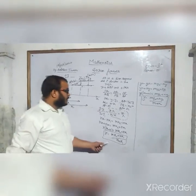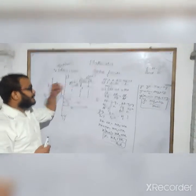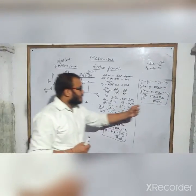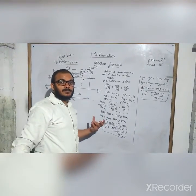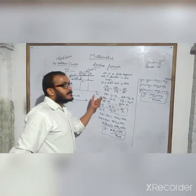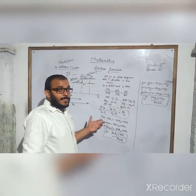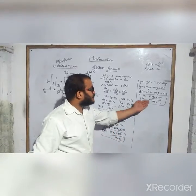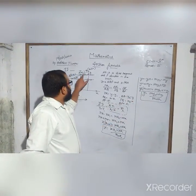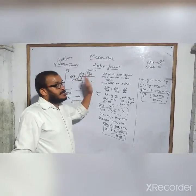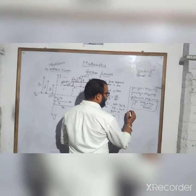So by this formula we will get the coordinates of P. This is what we call the section formula. Section formula means what? When a line is divided by a ratio, we can easily find out the coordinate by which the point divides these lines.